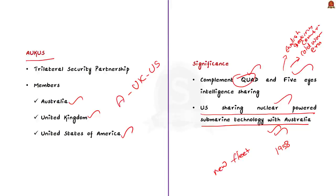Since Australia is also part of the Quad, this will improve the Quad's ability to ensure peace in the Indo-Pacific region. As the Roman saying goes, if you want peace, you must be prepared for war. Measures like this will act as a counter for China's influence in the Indo-Pacific, helping ensure freedom of navigation, rule-based order, and peace in the region. We also saw a little bit about Five Eyes intelligence cooperation.